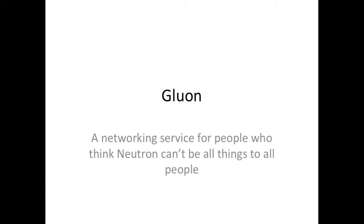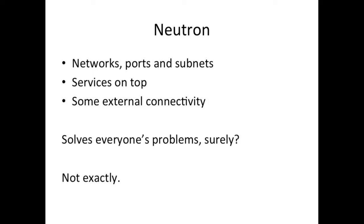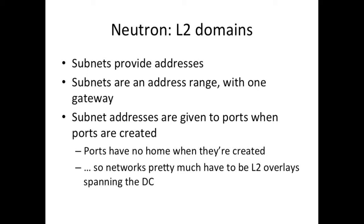What do I mean by that? Neutron is quite determined in what it delivers to you. Neutron is trying to give you a layer two network domain using networks, ports, and subnets. Ports attach virtual machine interfaces to a network. Networks forward traffic around to all other interfaces on the same network, and subnets provide the addressing. There are some services on top like load balancing and routers, and some external connectivity through the routers and via provider networks. But it doesn't solve everybody's problems — the reason is it's quite opinionated about what it does.